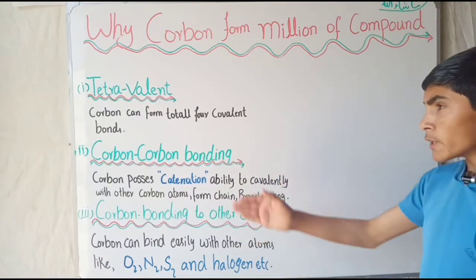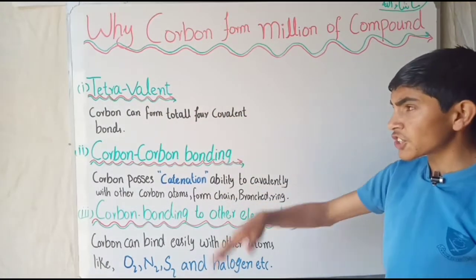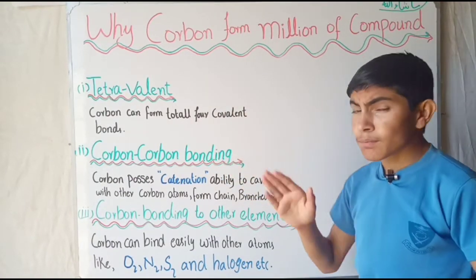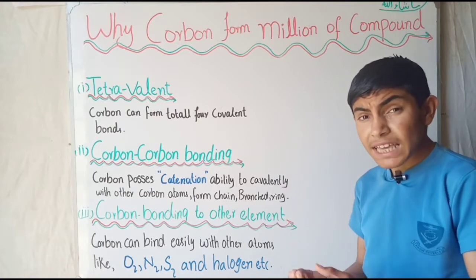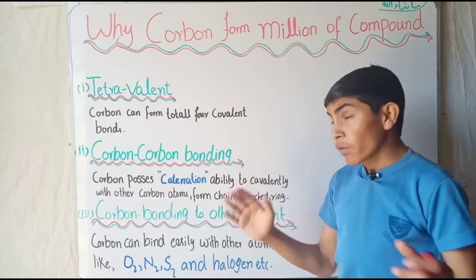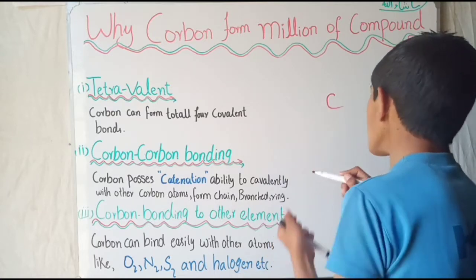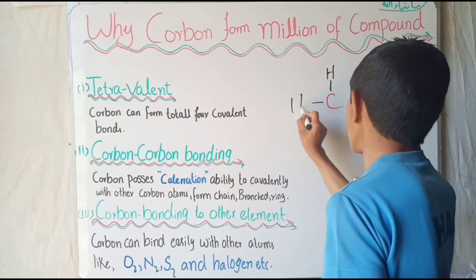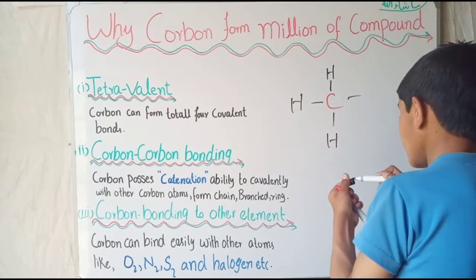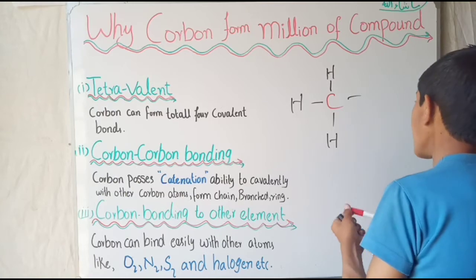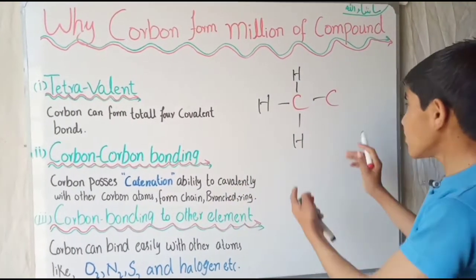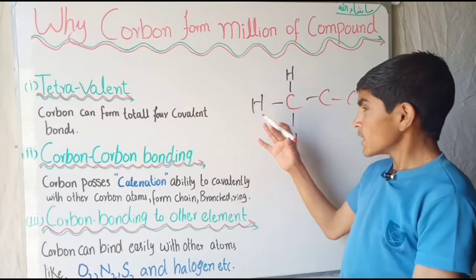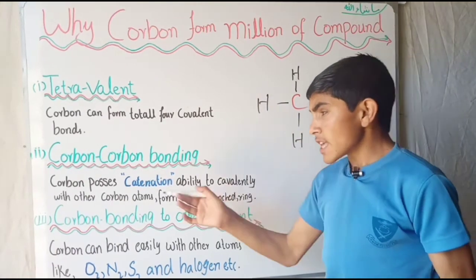The first property of carbon is tetravalency. Tetravalency means that carbon is allowed to make four covalent bonds. So a carbon will make four covalent bonds. Therefore it can form different shapes — some chain forms — and because carbon is allowed to make four bonds, it is a unique element.